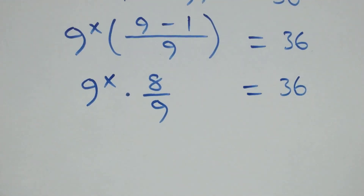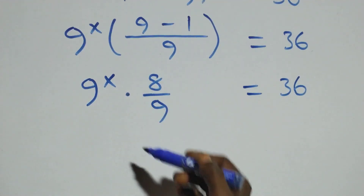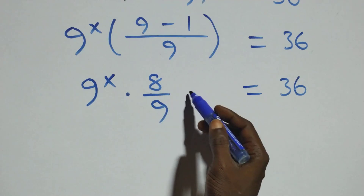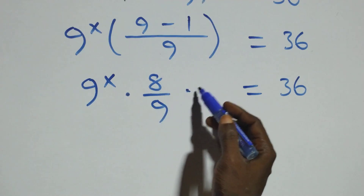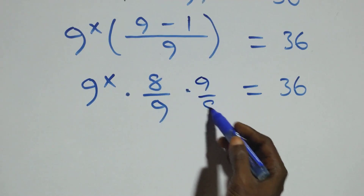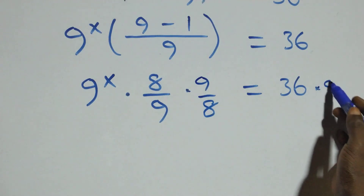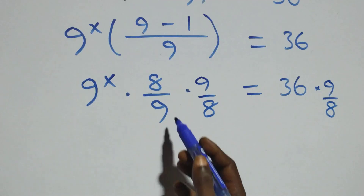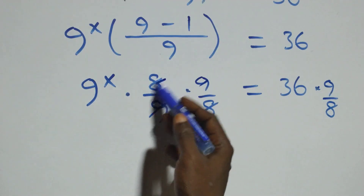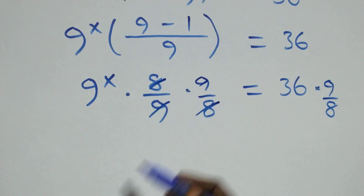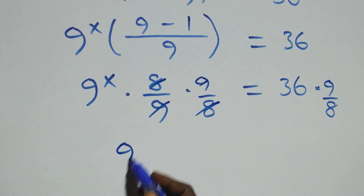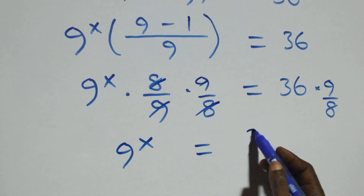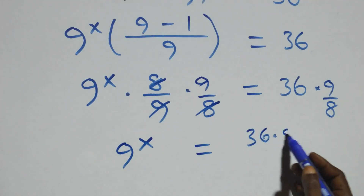We remove the 8 over 9 by multiplying both sides by the reciprocal, which is 9 over 8. Multiplying both sides by 9 over 8, the 8 over 9 and 9 over 8 cancel each other, and we have 9 raised to power x equals 36 times 9 over 8.